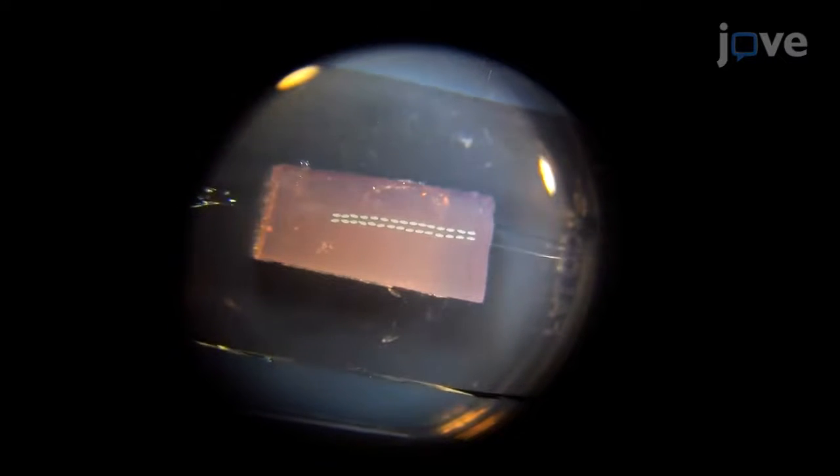Under a stereo microscope, lower a prepared coverslip over the embryos and gently press the two rows of embryos onto the glue.